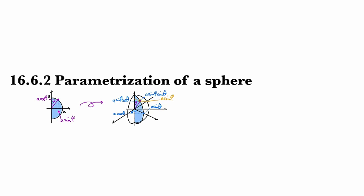Okay, so putting all this together, if we take sigma of phi theta to be a times, and then we have sine phi cosine theta, sine phi sine theta, and then cosine phi, then that will give us,